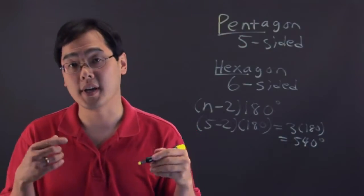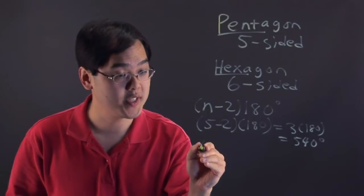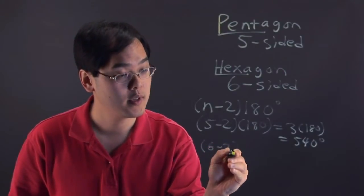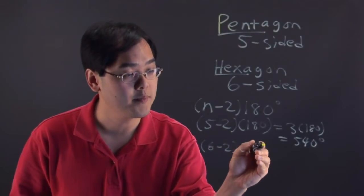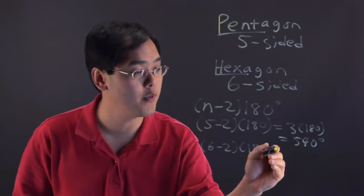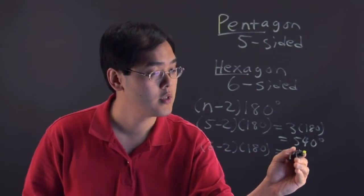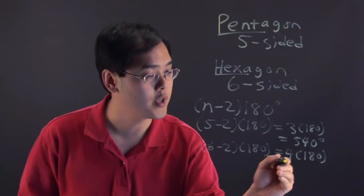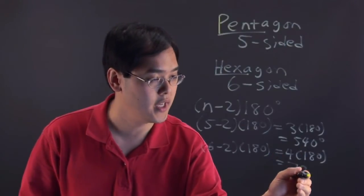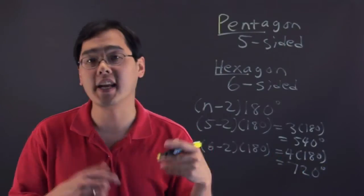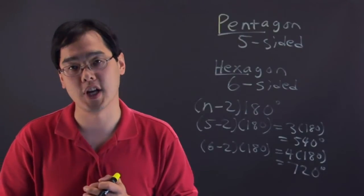Whereas if you plug in a hexagon, a six-sided figure, you have six minus two times 180. Six minus two being four times 180 will give you a total of 720 degrees. So there's a 180 degree difference of the interior angles between the two shapes.